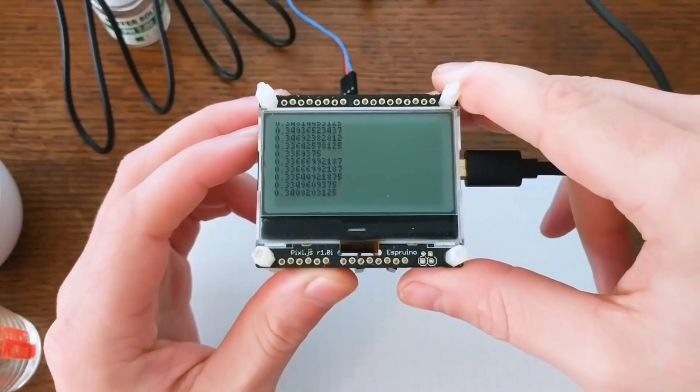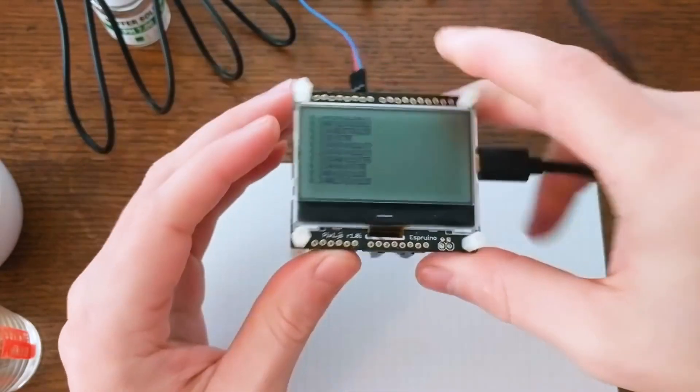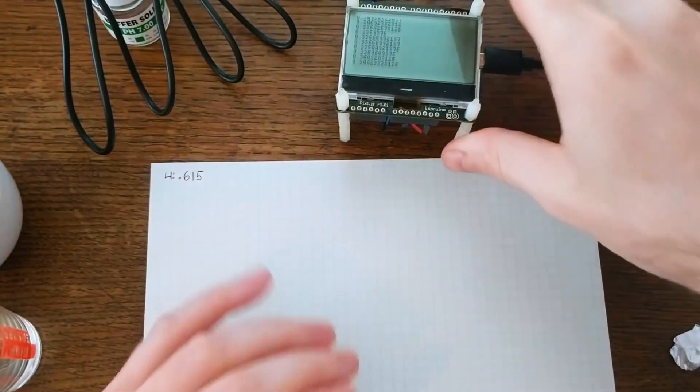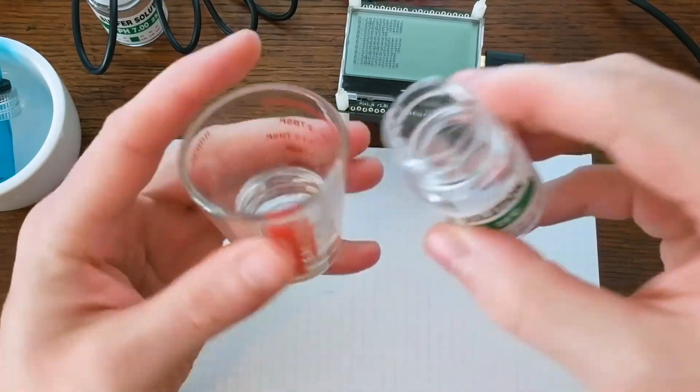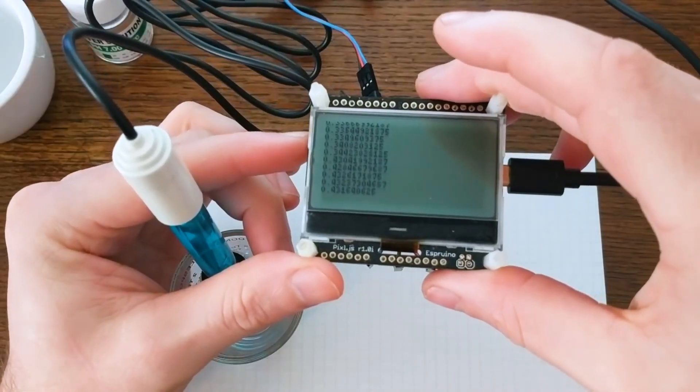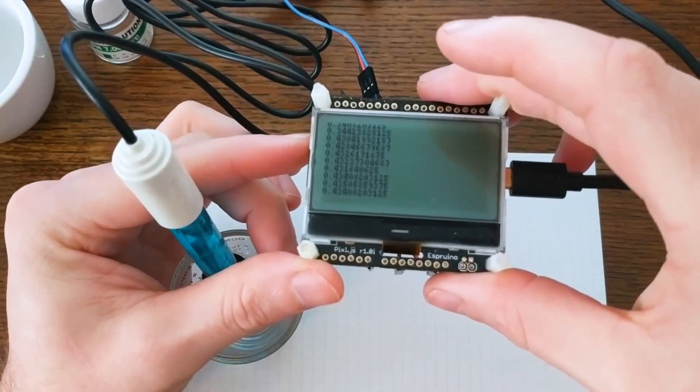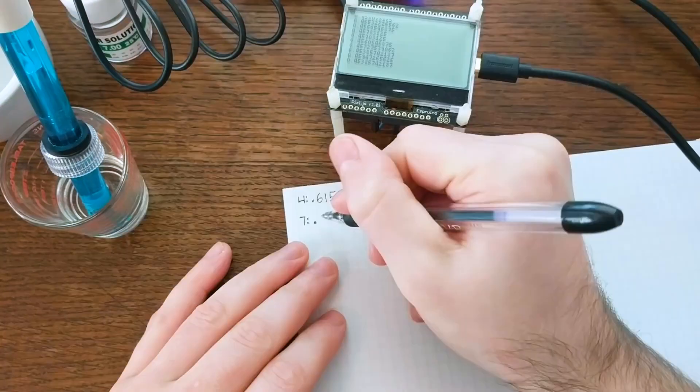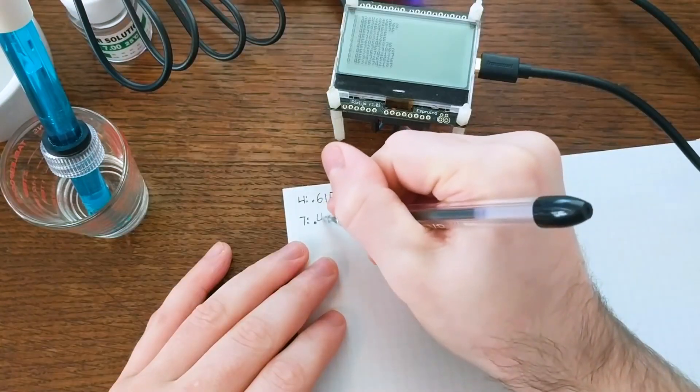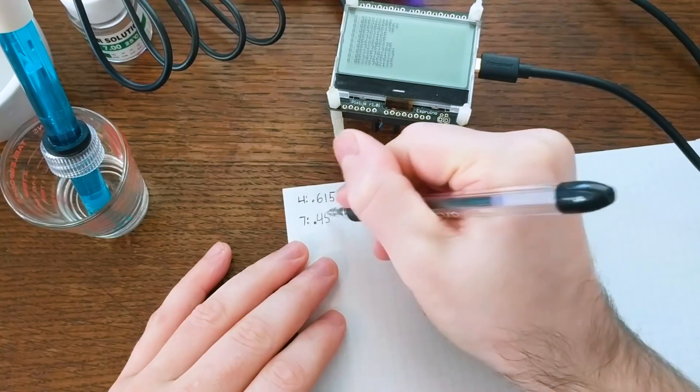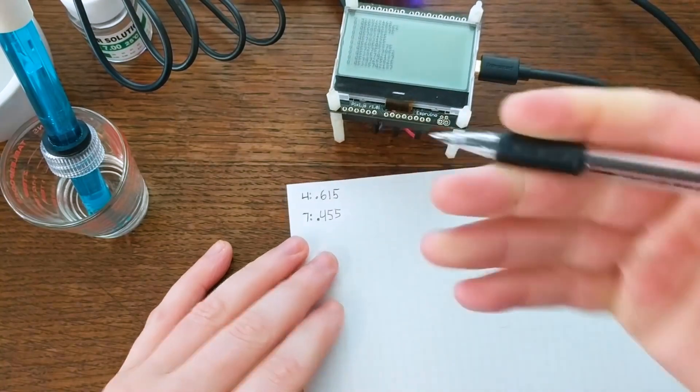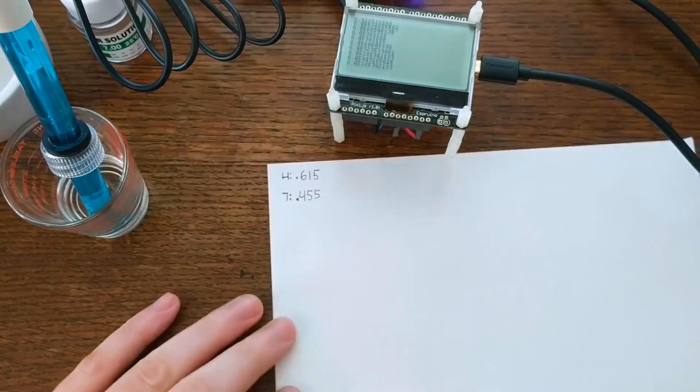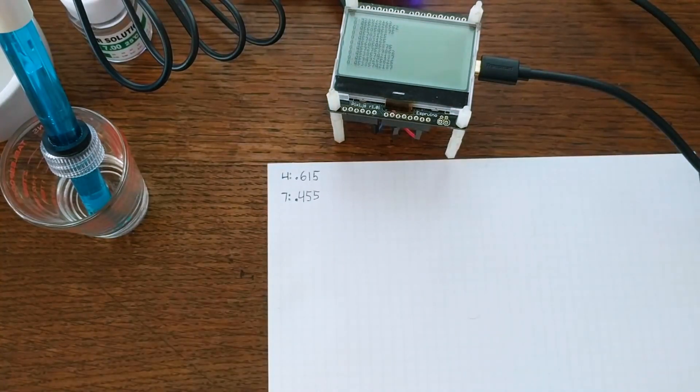Now I'm cleaning the probe again in more distilled water, and the reading is back to about 0.33. Next I poured a bit of the pH 7 solution and started taking measurements. Again, there was a good amount of fluctuation at first, but it settled to around 0.455, so that's what I've recorded as pH 7. That means that my distilled water is actually on the basic side, since it's measuring in the opposite direction of the acidic pH 4 solution.